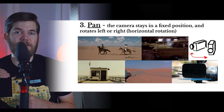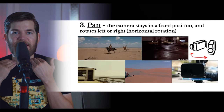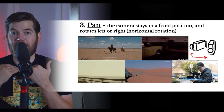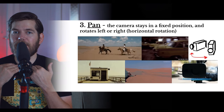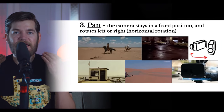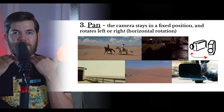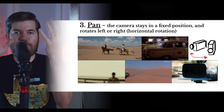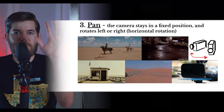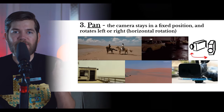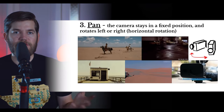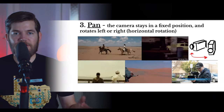The pan shot is different from the tilt shot. Instead of mimicking the head nodding yes, the pan shot mimics a head shaking no. It turns from left to right or from right to left, staying in a fixed position. The camera stays in one spot and rotates left to right or right to left — you are rotating horizontally. This can be used to follow a subject, reveal something to the audience, or move from one subject to another.